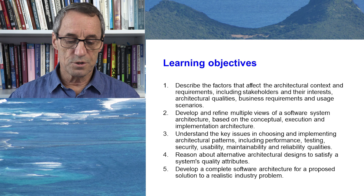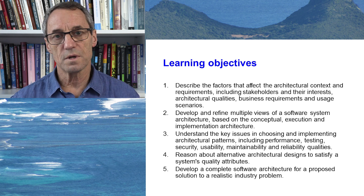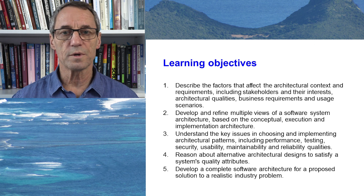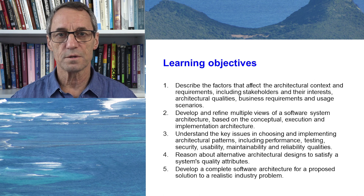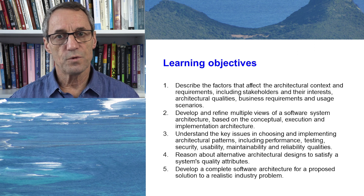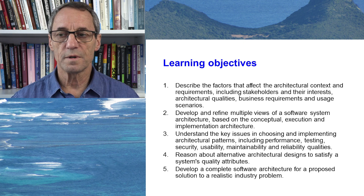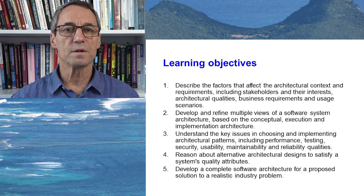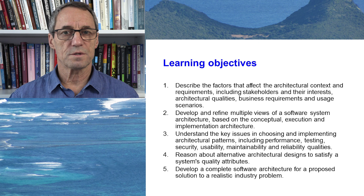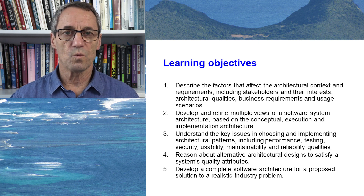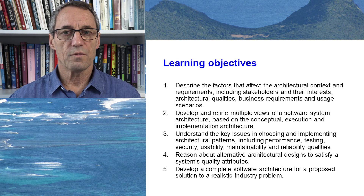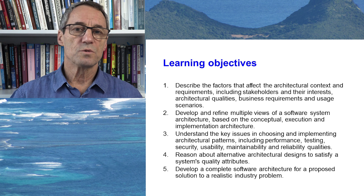You will understand the key issues in choosing and implementing architectural patterns, including patterns that suit performance, patterns for testing, security, usability, maintainability and reliability qualities. There are certain ways of putting an architecture together that work well for particular characteristics. You should be able to reason about alternative architectures for a similar problem, because there is seldom a clear definitive answer — there are usually trade-offs. Architecture does not have one best answer; it is a matter of trading one requirement against another so you can advise stakeholders which solution you recommend and why.